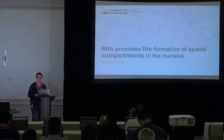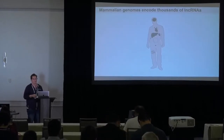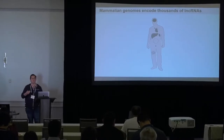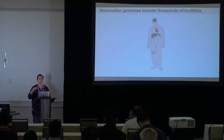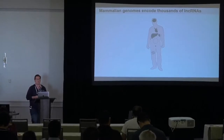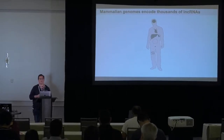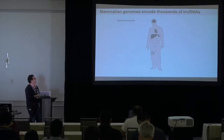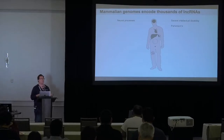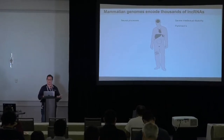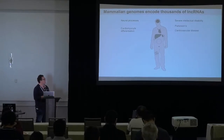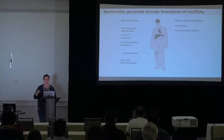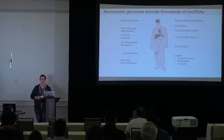I want to talk today about the role that RNA plays in shaping nuclear organization and gene regulation. Mammalian genomes encode tens of thousands of long non-coding RNAs, which encode multi-exonic transcripts but are not translated into proteins. These lncRNAs have been implicated in many different biological processes and human diseases, including neuronal disorders, intellectual disabilities, Parkinson's, cardiomyocyte differentiation, cardiovascular diseases, immune responses, and cell cycle regulation.